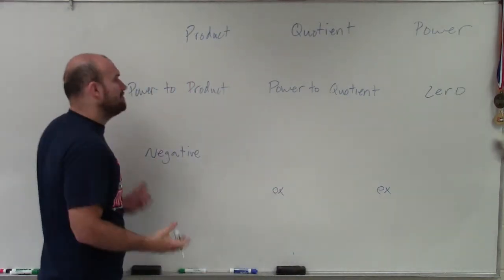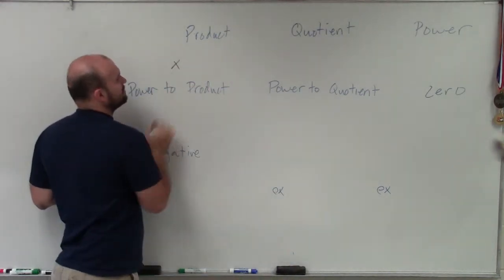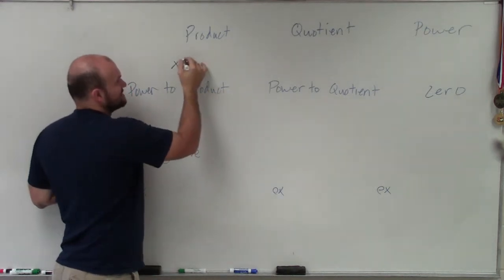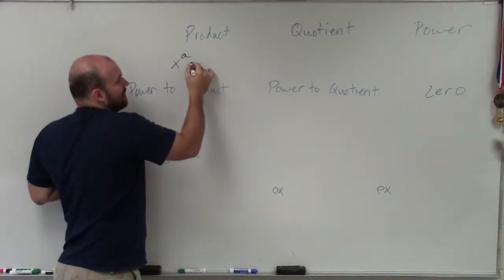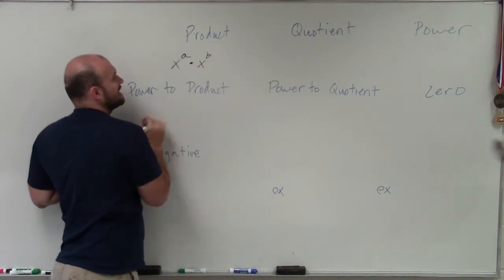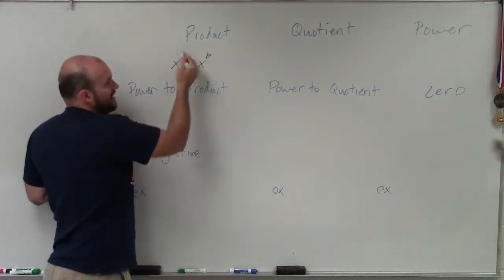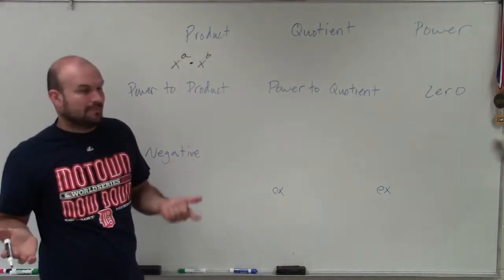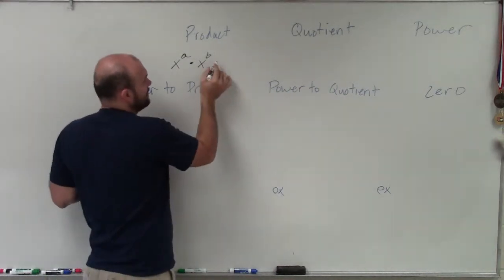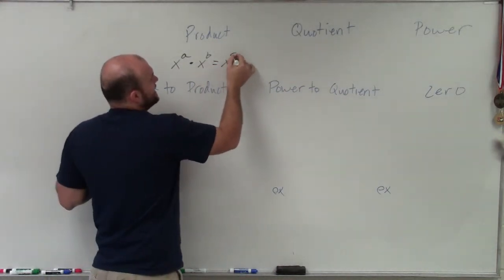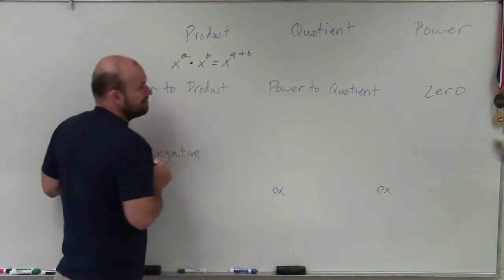So the product rule basically states that whenever I'm multiplying exponents with a base x and they have the same or different powers, so x to the a times x to the b, where a and b represent numbers, then when I'm multiplying, all I'm simply doing is adding the powers: a plus b.